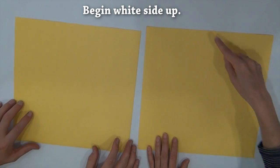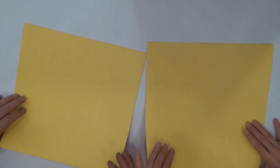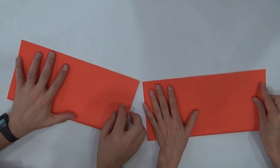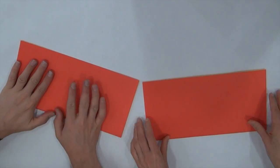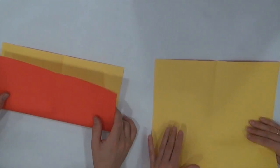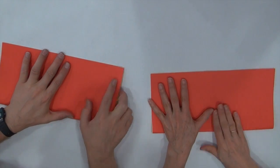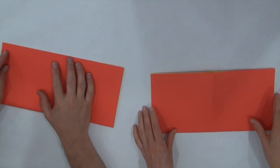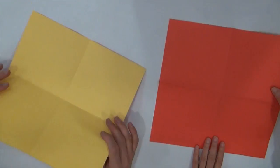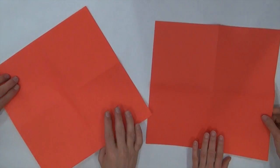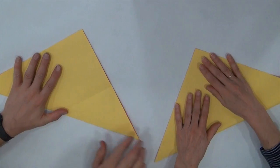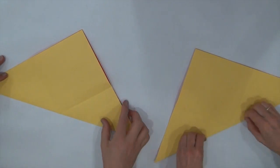We're going to begin by folding the central creases, central lines. So, we're going to fold it in half in both directions. Okay, now we're going to turn over, and fold the diagonals in both directions also. Okay, fold the diagonals in half in both directions.